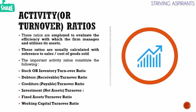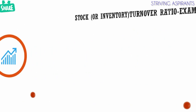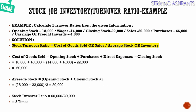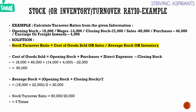First we can check the example related to stock or inventory turnover ratio. We have this given information: opening stock 18,000, wages 14,000, closing stock 22,000, sales 80,000, purchases 46,000, carriage or freight inwards 4,000. We know the stock turnover ratio formula is cost of goods sold divided by average stock or inventory.